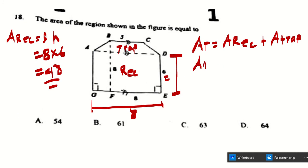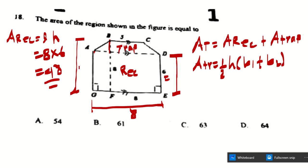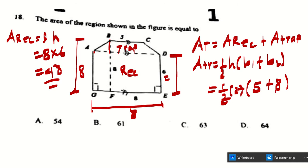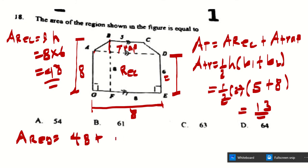The area of the trapezium is half times height times (base one plus base two): half times 2 times (5 plus 8). The 2 cancels with the half, and 5 plus 8 is 13, so the trapezium area is 13. Therefore the total area is 48 plus 13 equals 61, found at choice B.